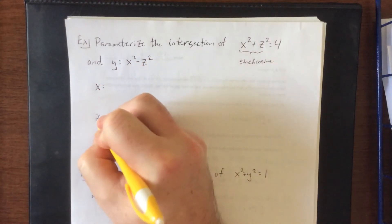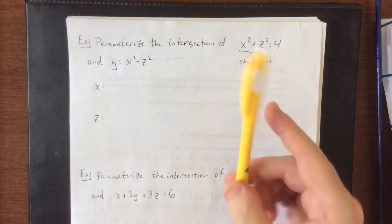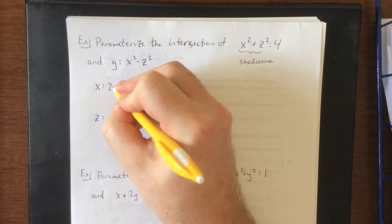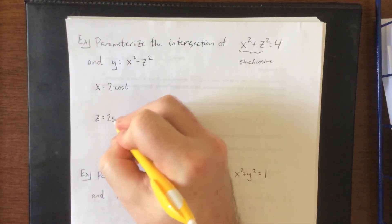So do bear in mind parameterizations are not unique. I'm going to let x be the cosine, so we'll say two times the cosine of t, and we'll let z be two times the sine of t.